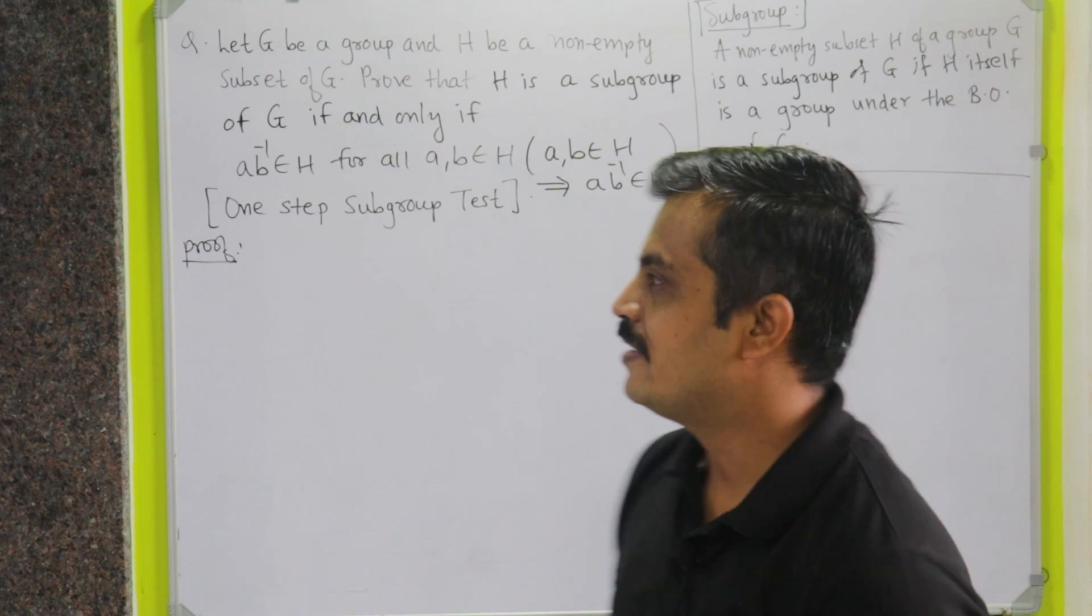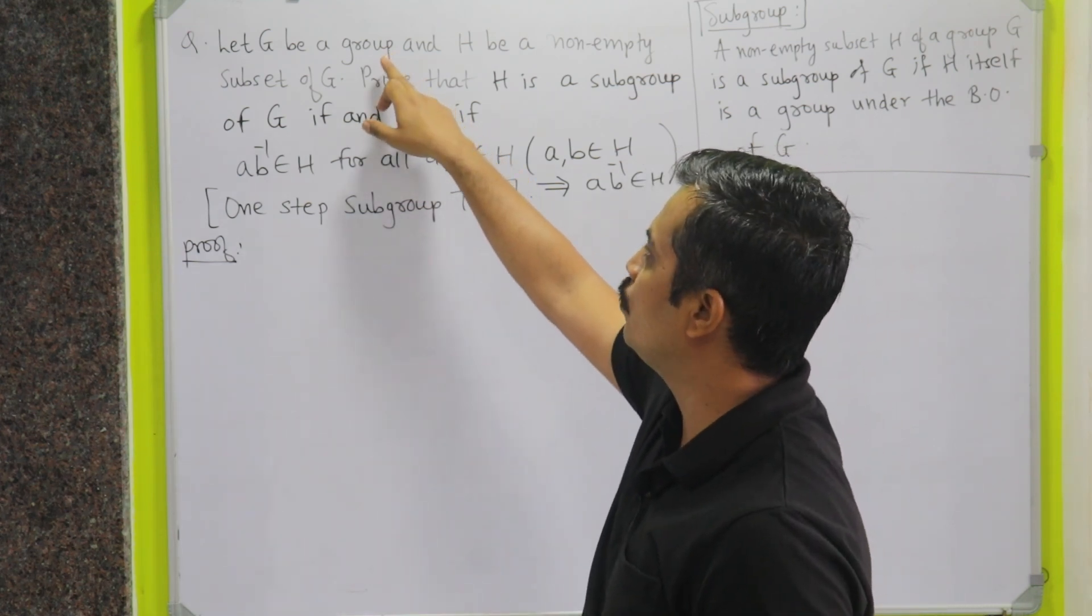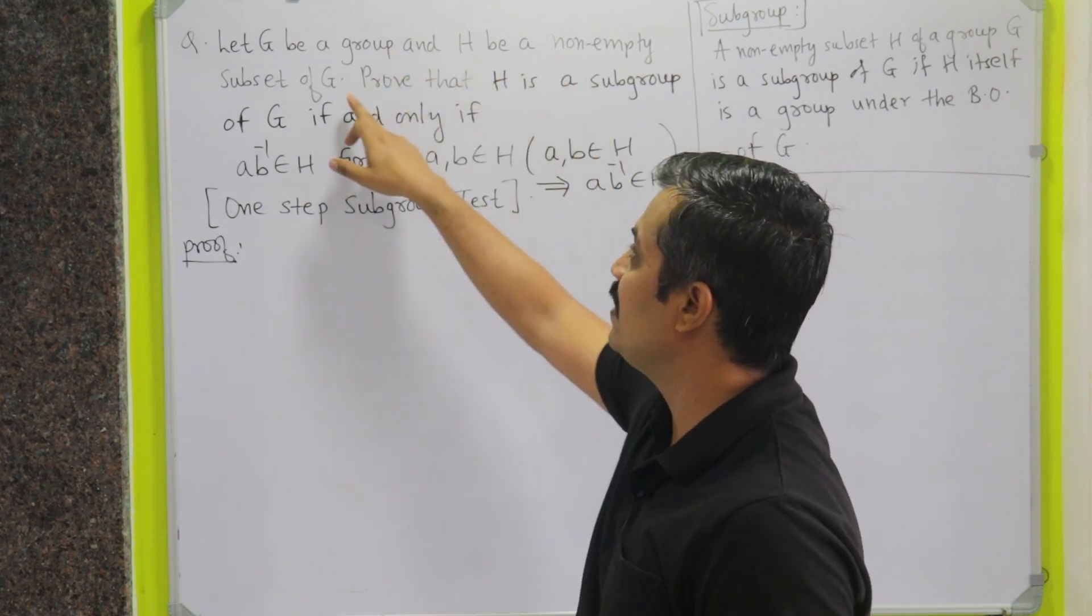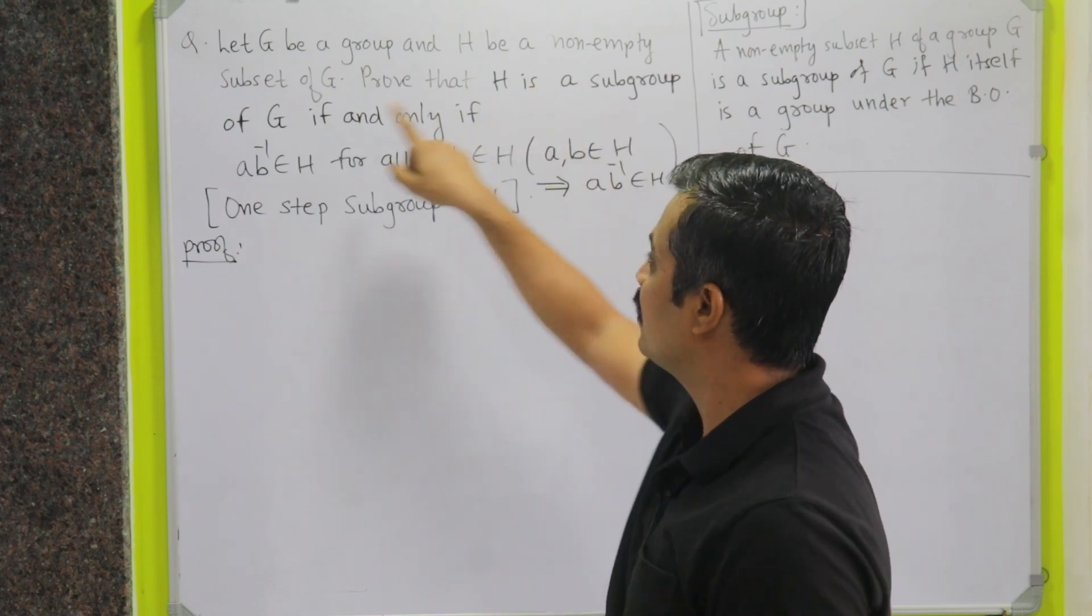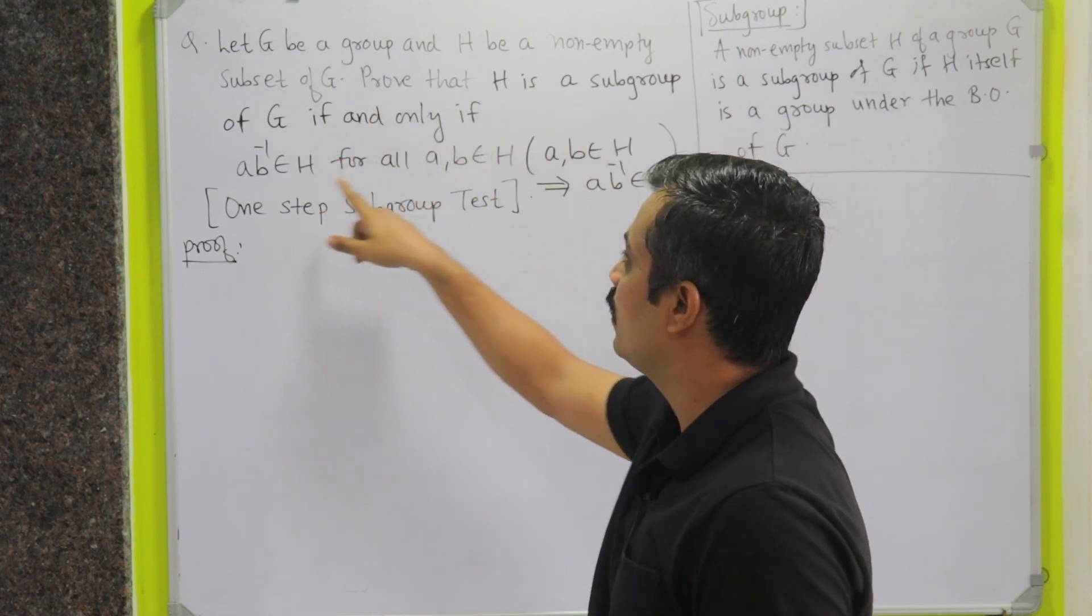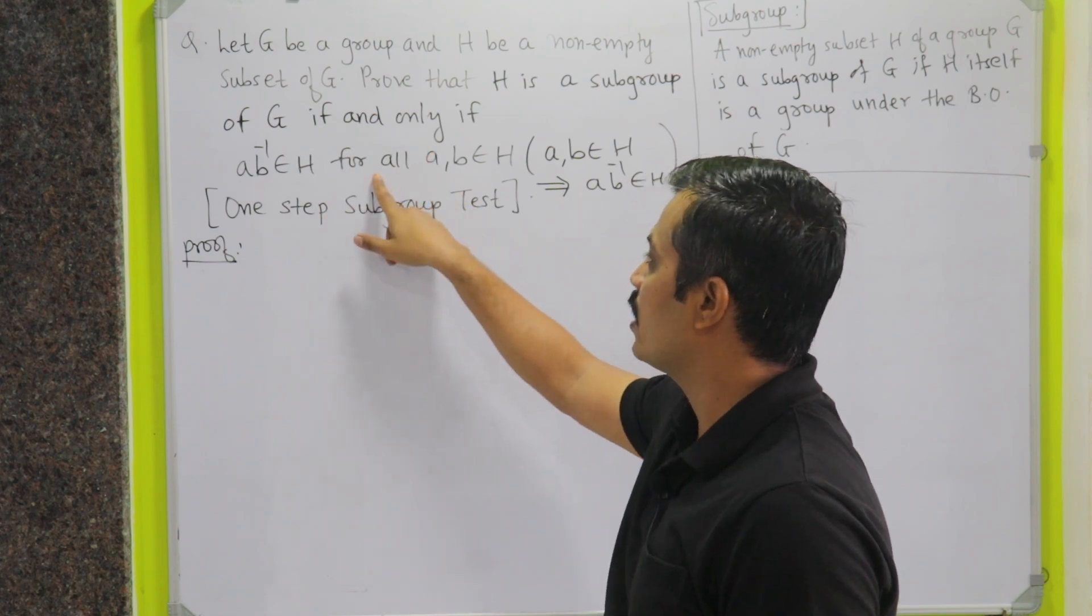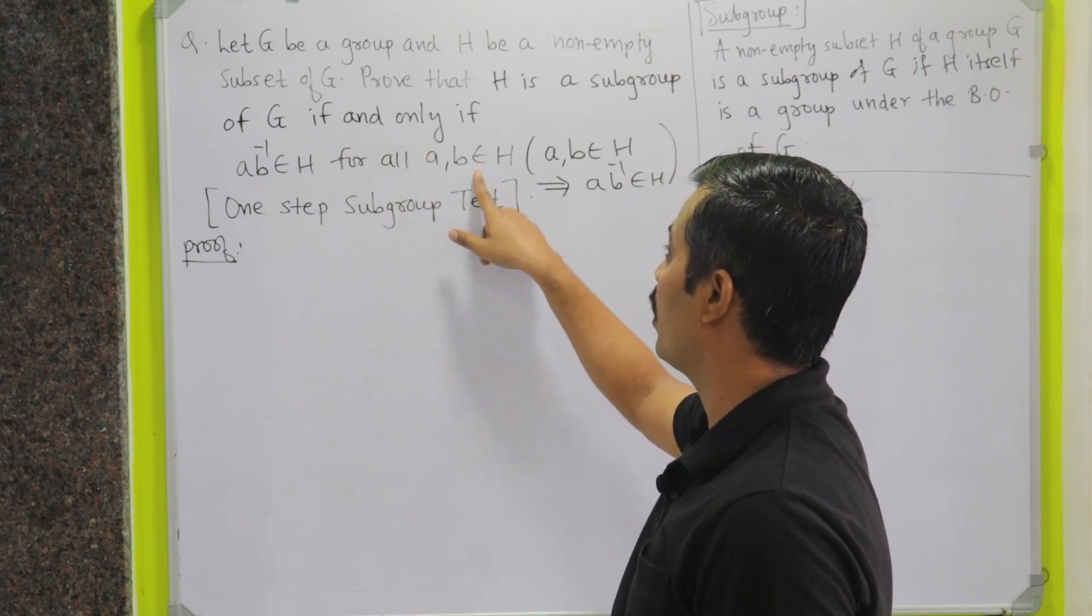The statement says if we are having a group G and H is a non-empty subset of G, then H will be a subgroup of G if and only if AB inverse belongs to H for all A, B belongs to H.